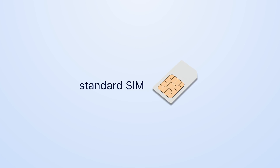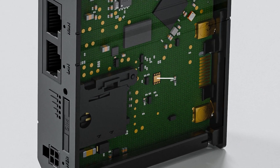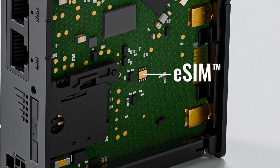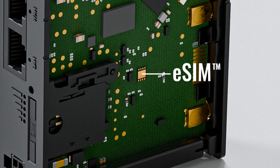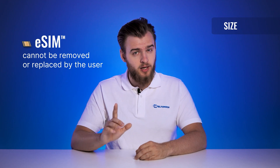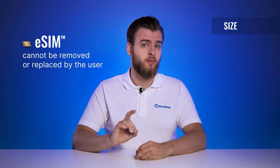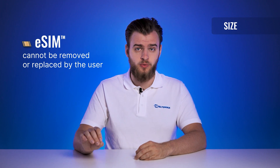Starting from the overall visual difference, a SIM card is a small removable plastic card with an embedded chip that stores user data. An eSIM card, on the other hand, is a small chip embedded directly into the device's motherboard, which cannot be removed or replaced by the user.